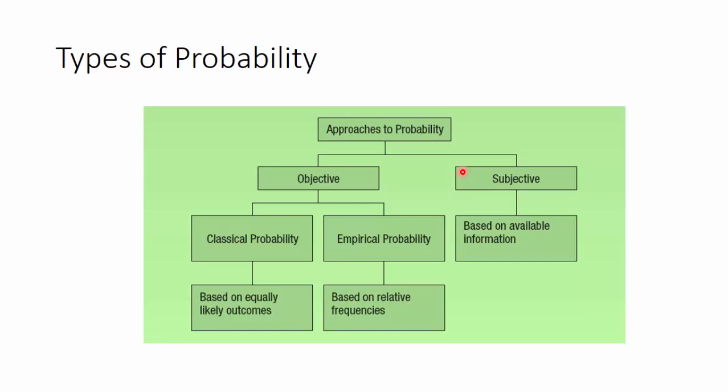Subjective is subjected to individual preferences and choices. It's based on the available information about the events that a person has. While objective remains the same for people because it's objective. It could be classified into two types: either classical probability or empirical probability. Empirical probability is based on relative frequencies and long-run probabilities. Classical probability is based on equally likely outcomes. So the rolling of a die was equally likely and it is based on classical probability.